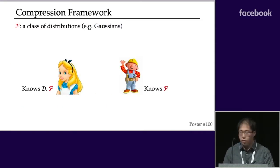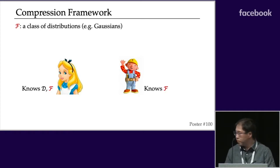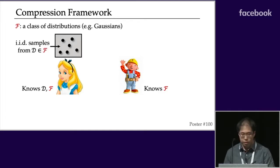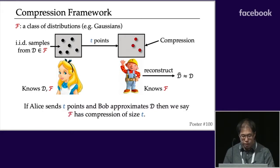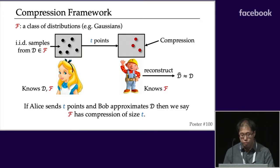The general compression framework is as follows. Fix a class F of distributions — think of F as a Gaussian or mixtures of Gaussians. There are two parties, Alice and Bob. Alice knows the class F and also has a specific distribution D in mind; Bob only knows F. Alice's goal is to communicate her distribution to Bob, but she's restricted to first drawing samples, finding representative points among them, and sending a small subset of those points — called a compression — to Bob. Bob then constructs a distribution from what he receives. If Alice can send only T points and Bob can reconstruct a distribution close to Alice's, we say class F has a compression of size T.